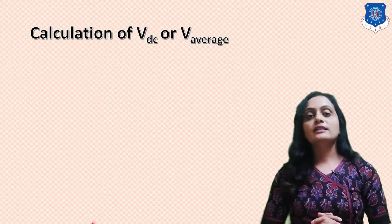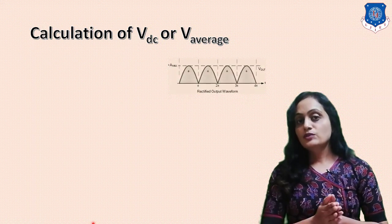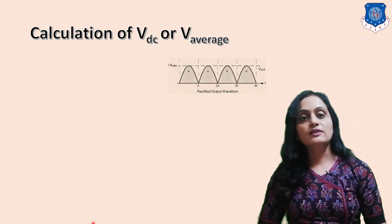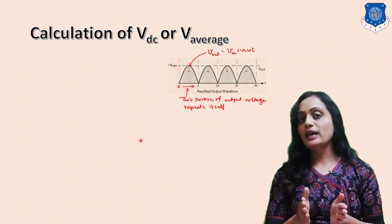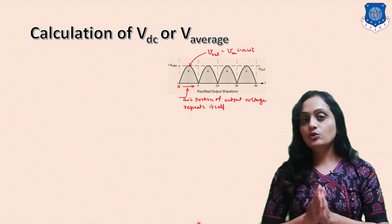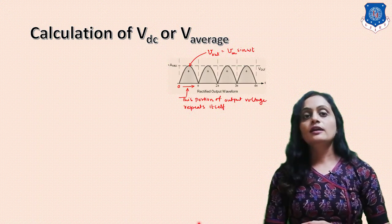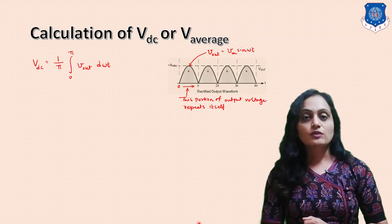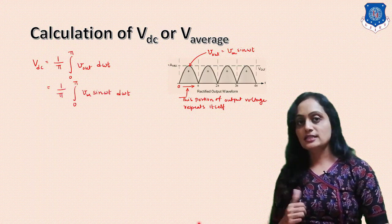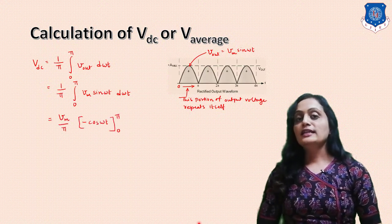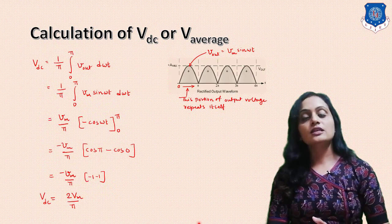Now we will calculate the DC or average value of the voltage. Analyzing the output voltage signal — the signal from 0 to π is sinusoidal, so the output voltage is given by Vm·sin(ωt), and this portion is repeated. The average value is found using the portion from 0 to π. So Vdc = (1/π) · ∫₀^π Vout d(ωt). Substituting Vout = Vm·sin(ωt) and integrating, we get Vdc = 2Vm/π.